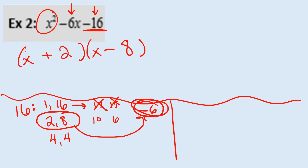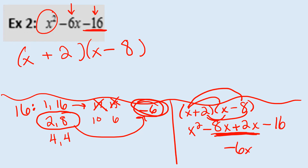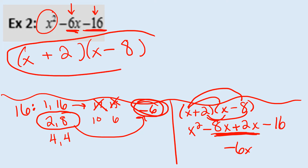To verify our answer, we foil it back out. Taking x times x gives x squared; outside times outside gives negative 8x; inside times inside gives plus 2x; last times last gives negative 16. So the negative 8 and positive 2 add to a negative 6x, getting back the middle term of the original equation. That's how I knew to make the 2 positive and the 8 negative in the factored form.